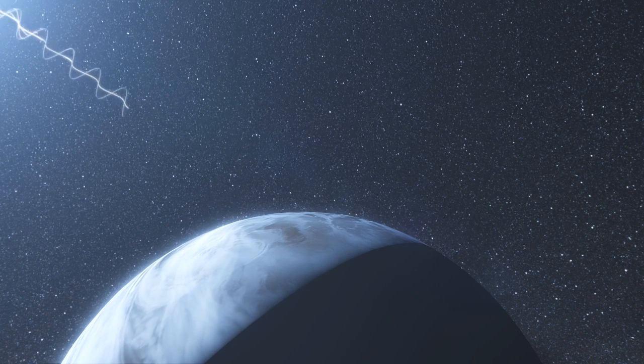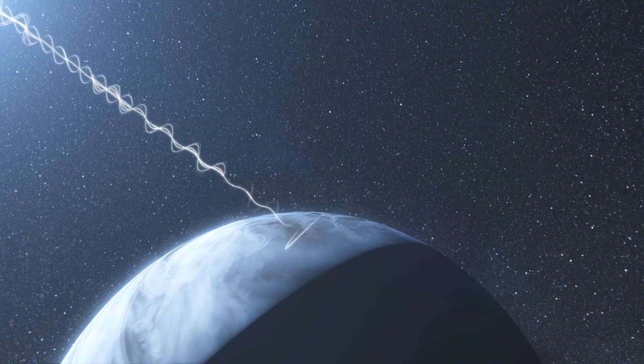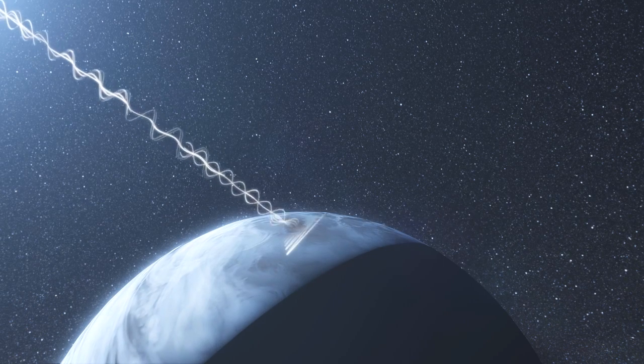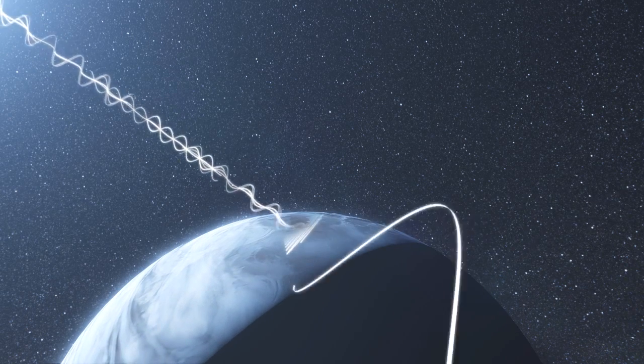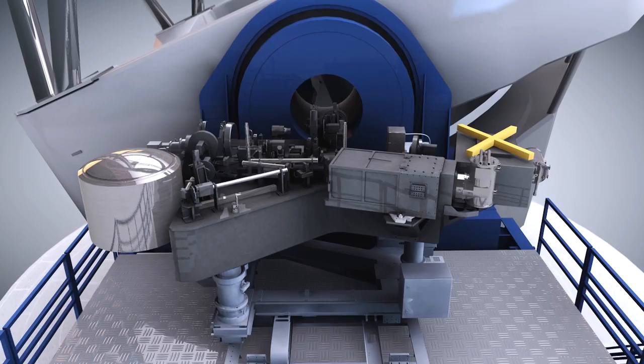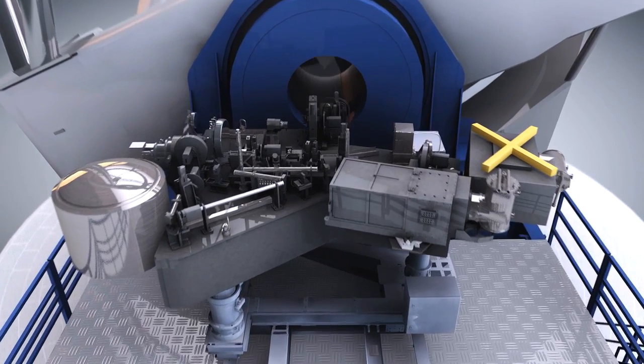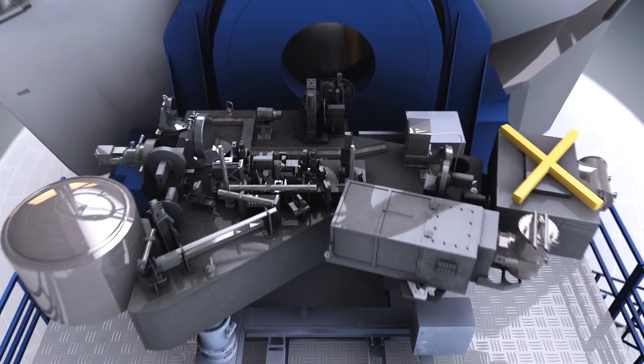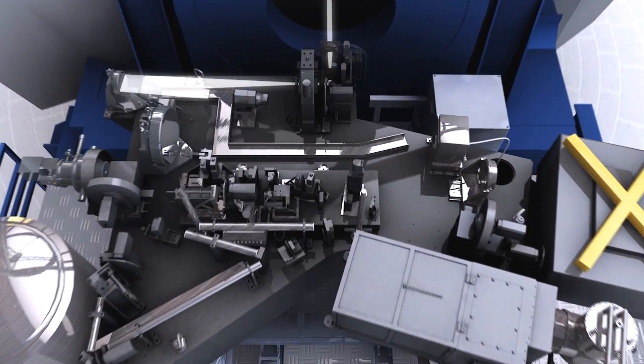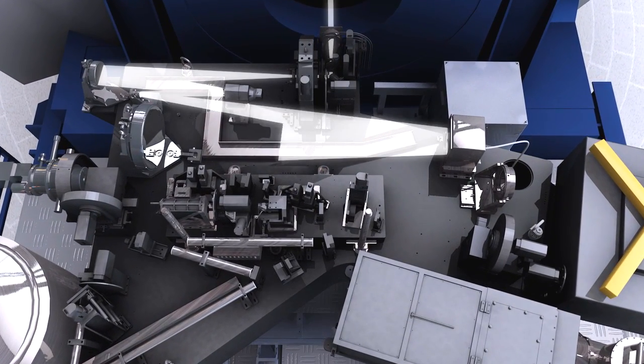However, this halo is unpolarized, whereas the light from the planets is generally polarized. The new SPHERE instrument will be able to pick out a planet's faint signal of polarized light from the unpolarized stellar halo.